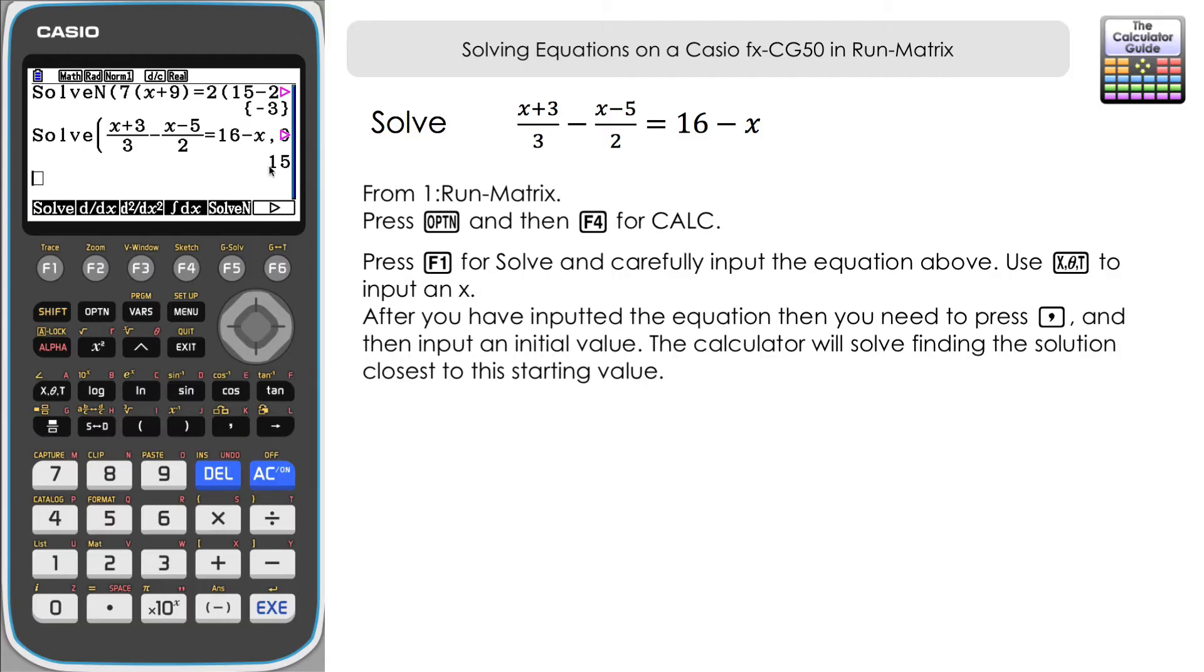Essentially it's found the closest solution to zero which is 15, but it is the only solution for this example. Also notice that we didn't get that warning message because this is the solution that is closest to zero. Now let's just exploit this idea that we can have different starting values and we can even set limits as well, and I'll show you how that works with this example.